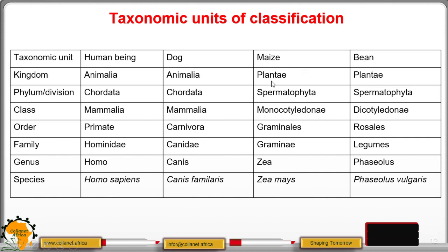For plants, maize and beans both belong to kingdom Plantae. They are flowering plants, hence division Spermatophyta. But maize has one cotyledon, so it belongs to class Monocotyledonae. Beans have two cotyledons, so they belong to class Dicotyledonae. The order and family are different. For maize, the genus is Zea and the species is mays, giving the scientific name Zea mays. These scientific names are italicized.